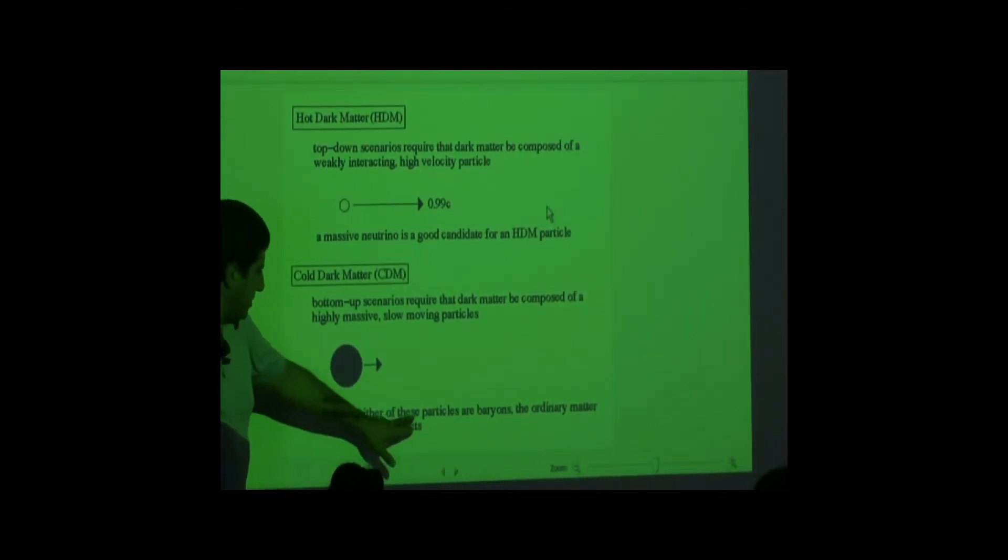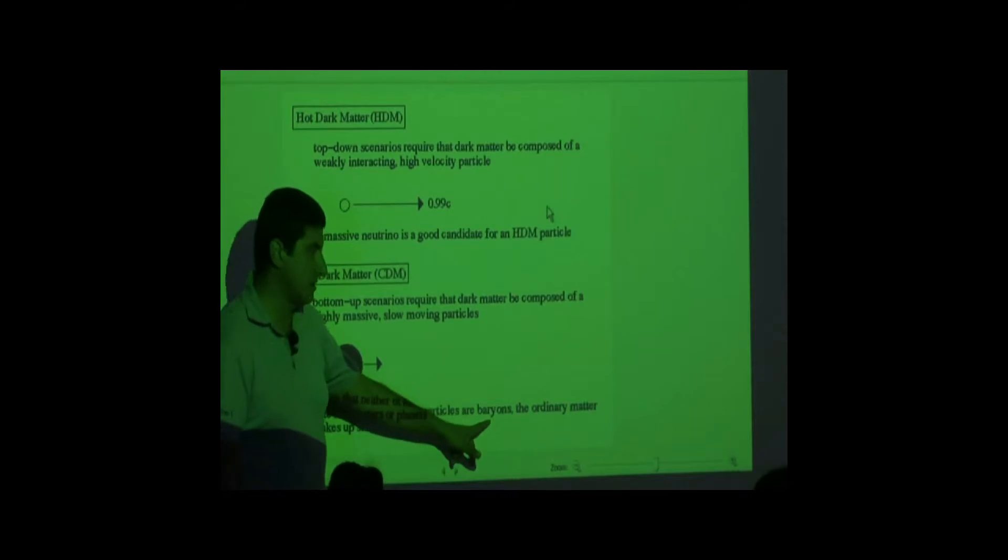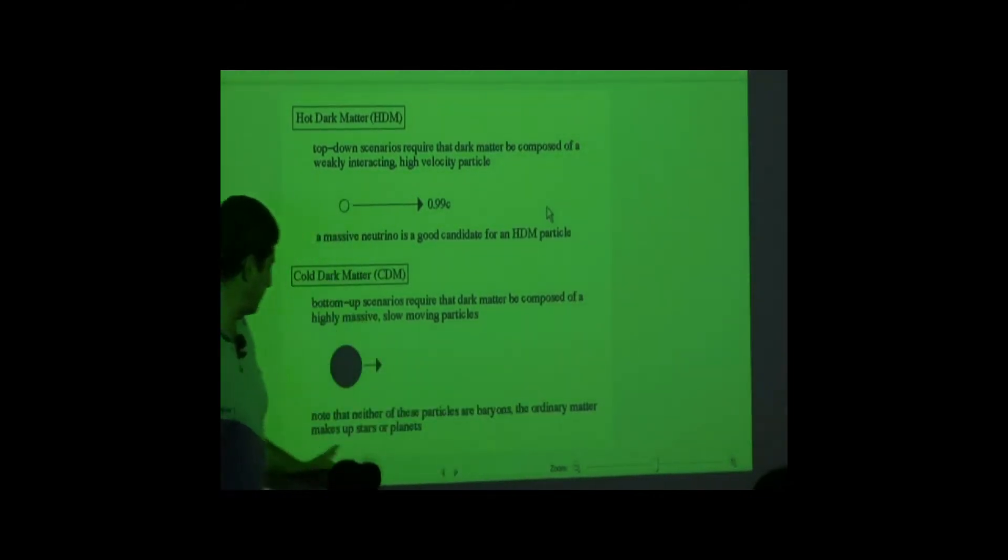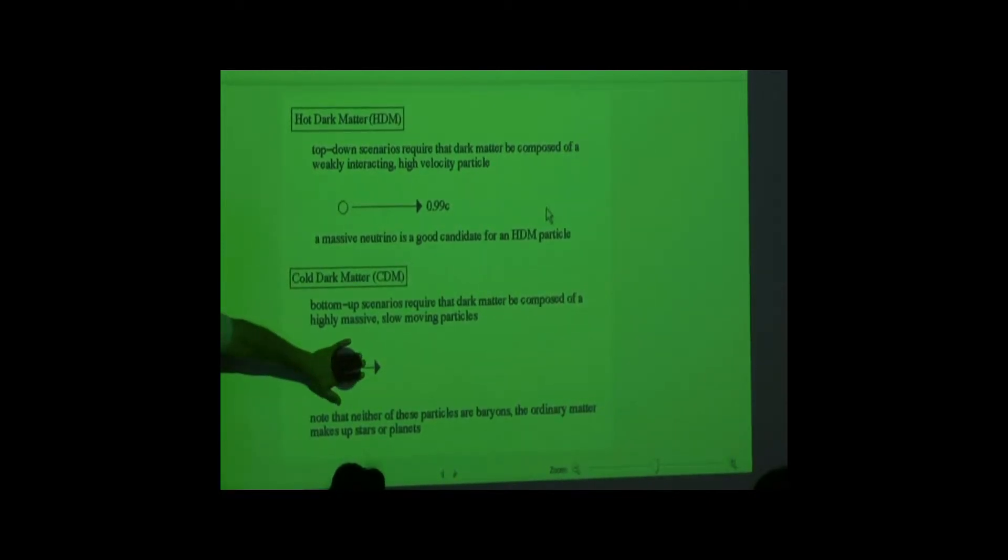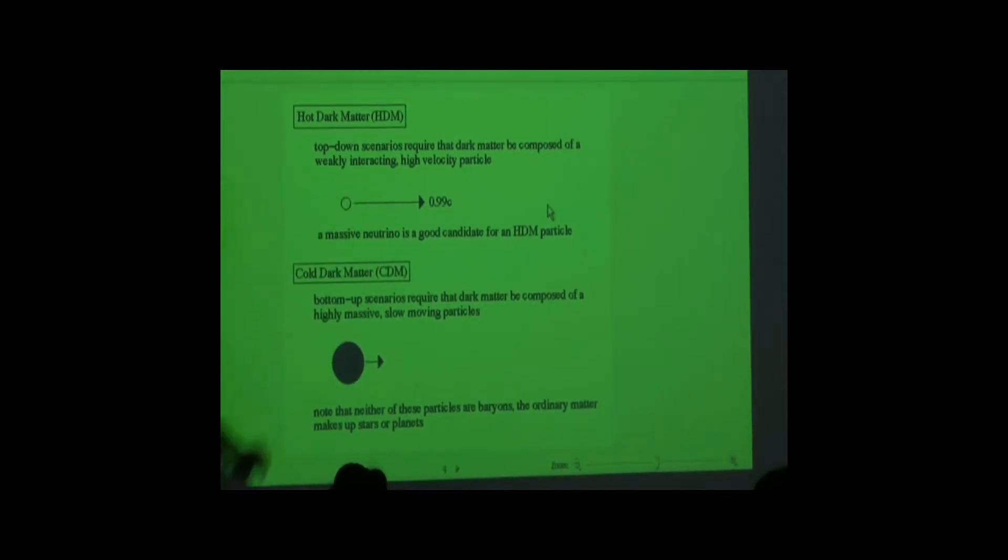Cold dark matter, CDM, bottom-up scenarios require that dark matter be composed of a highly massive, slow-moving particle. Note that neither of these particles are baryons. Baryons, the ordinary matter that makes up stars or planets. These are different category of particle, and neutrino is a different category of particle.